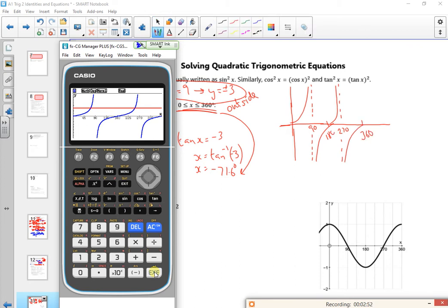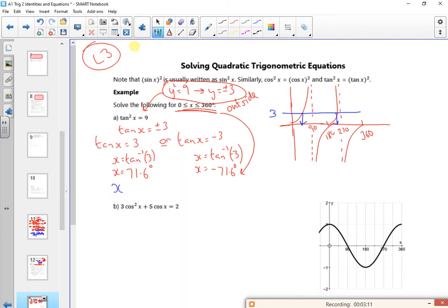So the first one I'm looking at is 3, which is there. So it gave me a first answer of 71.6. So the second answer will be add on 180. So let's have a look. So intersect 71.6, 251.6. So I've got x is 71.6 and 251.6. That's cool.